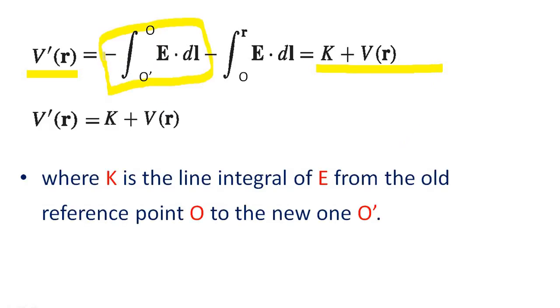Put a k over any term. It is minus integral O prime to r E dot dl, or we can write integral O to O prime E dot dl. That is, k is the line integral of E from old reference point O to the new reference point O prime.